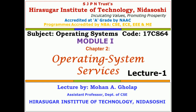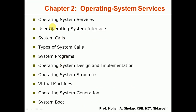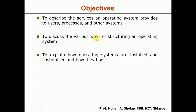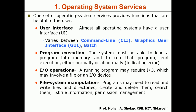Let us start Chapter 2 from operating systems: Operating System Services. This is under Module 1 and is the first lecture on this chapter. The contents covered include OS services, user-OS interface, system calls, types of system calls, system programs, OS design and implementation, OS structure, virtual machines, OS generation, and system boot. The objectives are: to describe services an OS provides to users and processes; to discuss ways of structuring an OS; and to explain how operating systems are installed, customized, and booted.